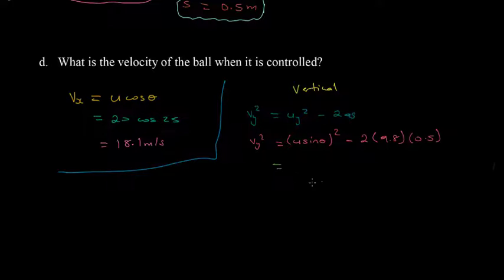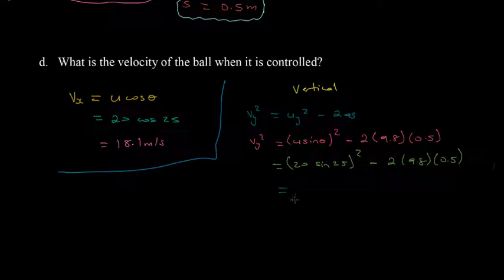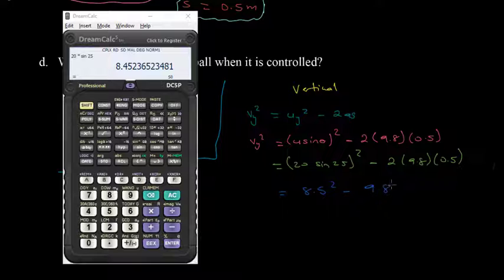Then now, we can simplify. So U sine theta is simply 20 sine 25, squaring that minus 2 times 9.8 times 0.5. So this now, we'll evaluate. So let's, so when we take the calculator, we say 20 sine 25, we get 8.5. And this is squared minus 2 times 0.5 is 1. So we're going to have 9.8 right there. So now when we take the square of 8.5, let's see what we get. So 8.5 squared, and we minus 9.8, and we get 62.5.